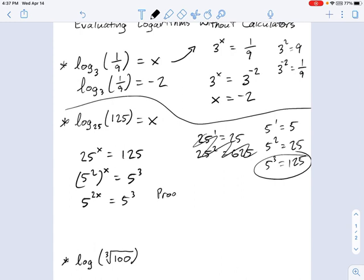I'm sorry. That's not the product rule. That is the power rule. Okay. Exponents raised to exponents. You multiply them together. So the bases are equal. That means two x equals three, which means x equals three halves. And that means, since we were solving for x in the beginning, that our problem log base 25 of 125 equals three halves.